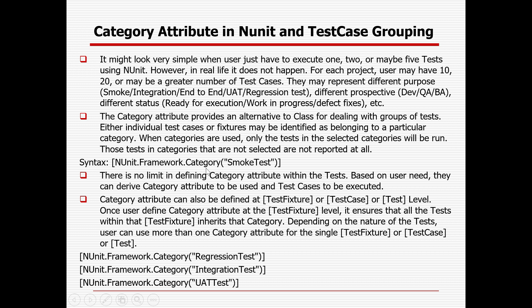So what is the syntax? After test fixture, test, or test cases, you need to add NUnit.Framework.Category and give the category name. There is no limit in defining category attributes within the test. Based on user need, they can derive category attributes to be used and test cases to be executed. Category attribute can also be defined at the test fixture, test cases, or test level. Once defined at the test fixture level, it ensures all tests within that fixture inherit that category. A user can also have more than one category attribute for a single test fixture, test case, or test.